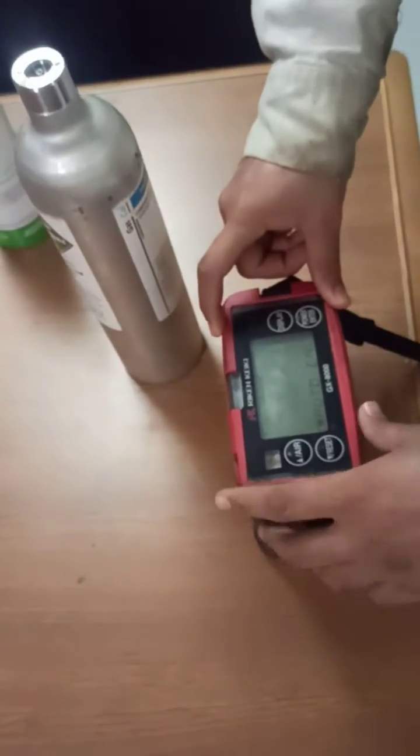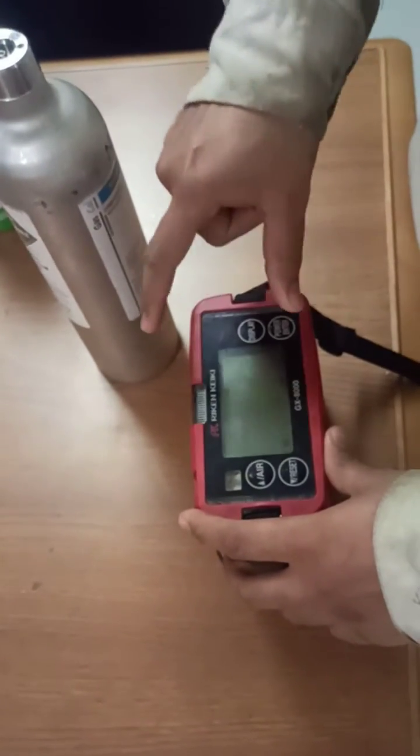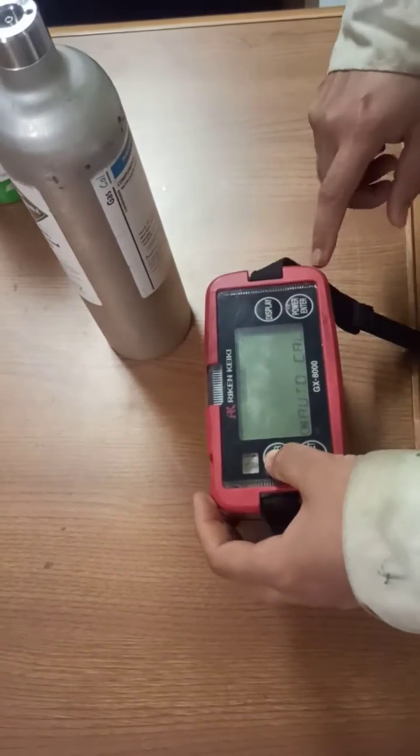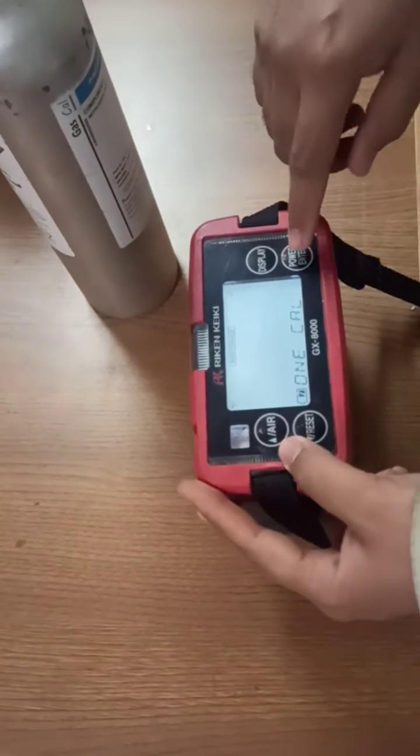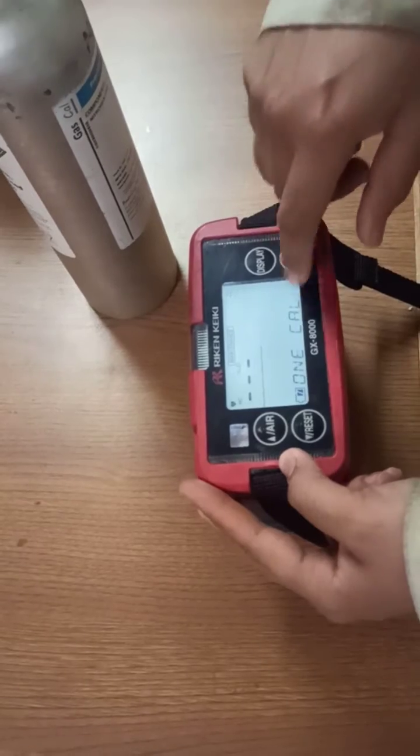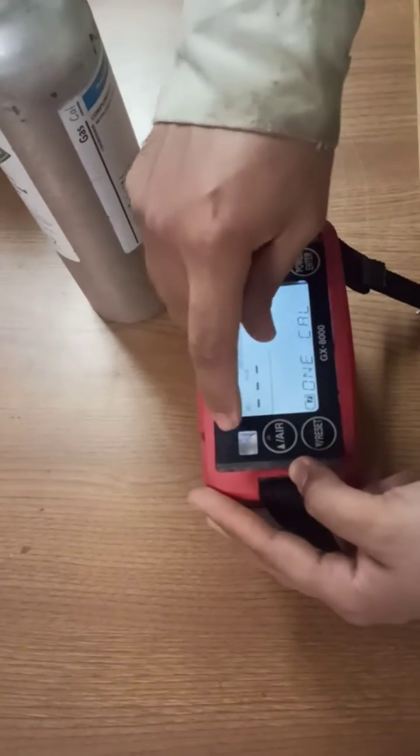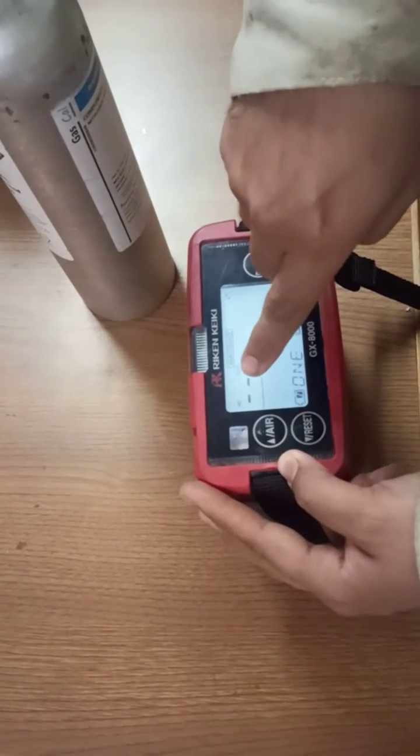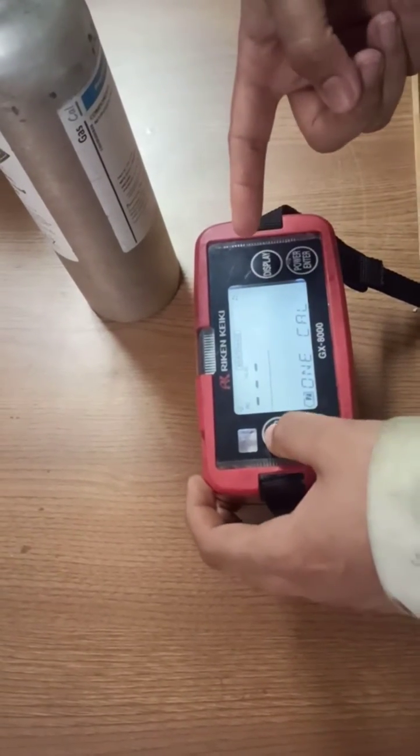Now we will perform one cal. That was auto calibration. Now we will perform one cal, so we will choose the option of one cal and press enter. In one cal, you can only do the calibration of one sensor at a time, so we will choose O2 sensor.